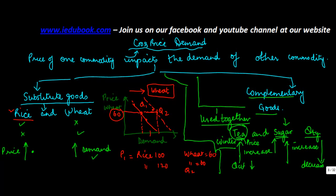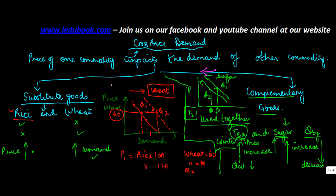To graphically represent this, let's take price on one axis and this is the demand curve for sugar. At price t1 — the price of tea — a certain quantity was demanded. As the price rises from t1 to t2, the quantity demanded will decrease and the demand curve will shift towards the left. So in case of complementary goods, the demand curve moves towards the left, whereas in case of substitute goods, the demand curve moves towards the right.